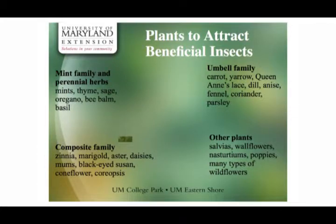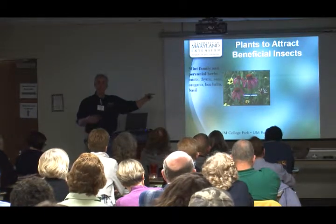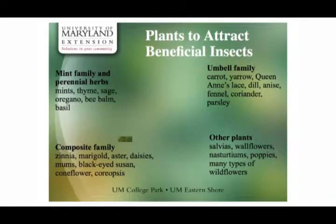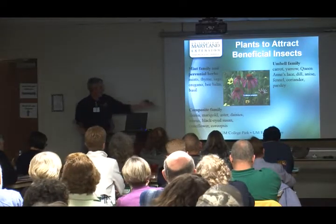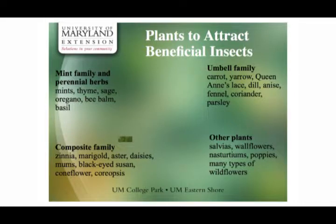Here are some plants that attract beneficials. Mints — how many people have cursed the day they grew mint? If you're going to grow mints or their relatives like thyme, sage, bee balm, and basil, some relatives in the mint family are great in the garden. The umbel family — queen anne's lace, dill, anise, fennel — they all have those flat umbrella-like flowers and support a lot of beneficial insect populations.